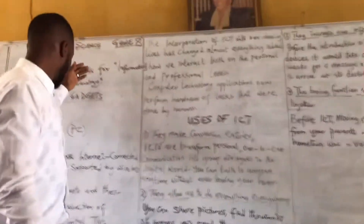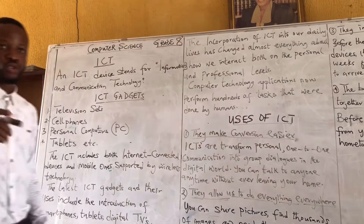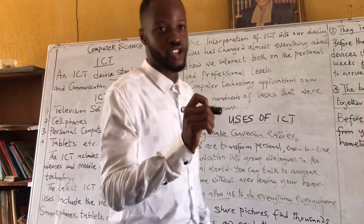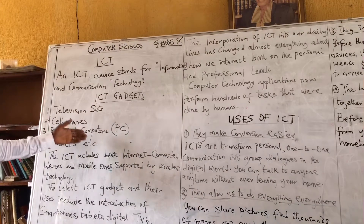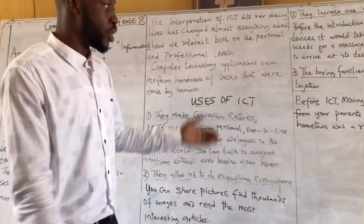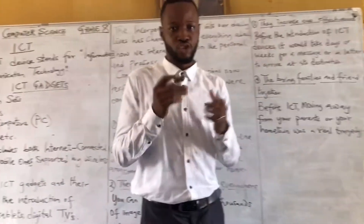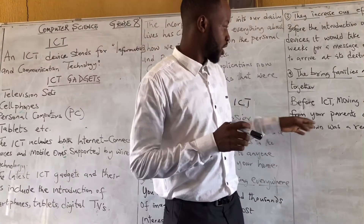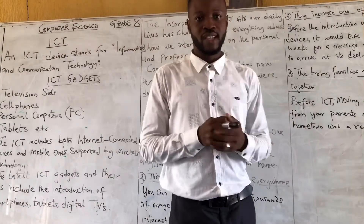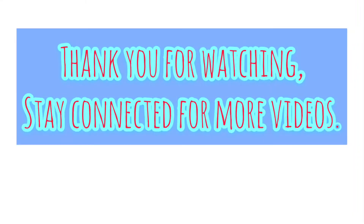This is where I'll round off for now. Remember, I started with ICT — Information and Communication Technology. I've told you about the gadgets: television, cell phone, and tablets, and I've told you their uses. For our next class, I will introduce you to more uses of ICT. I'll be sending your assignments on our WhatsApp platform. God bless you. Thank you.